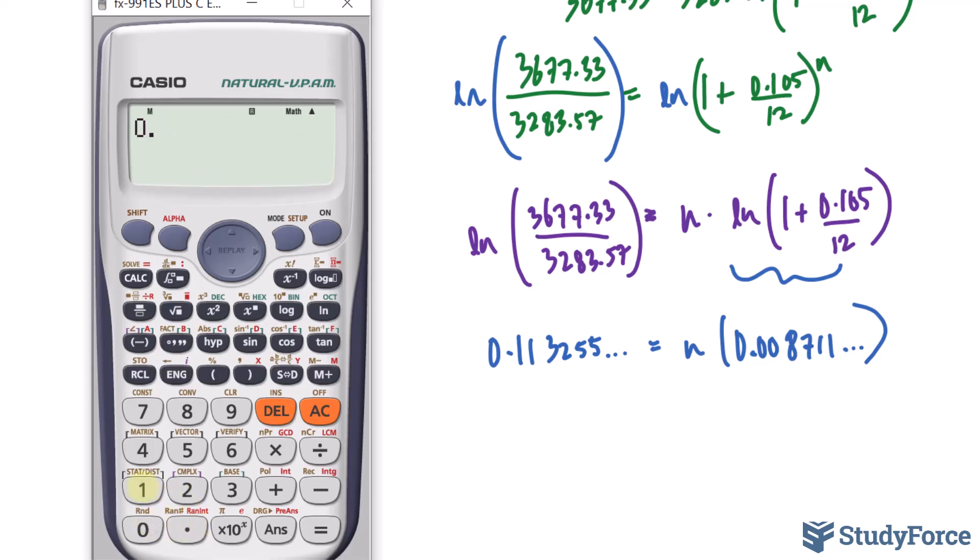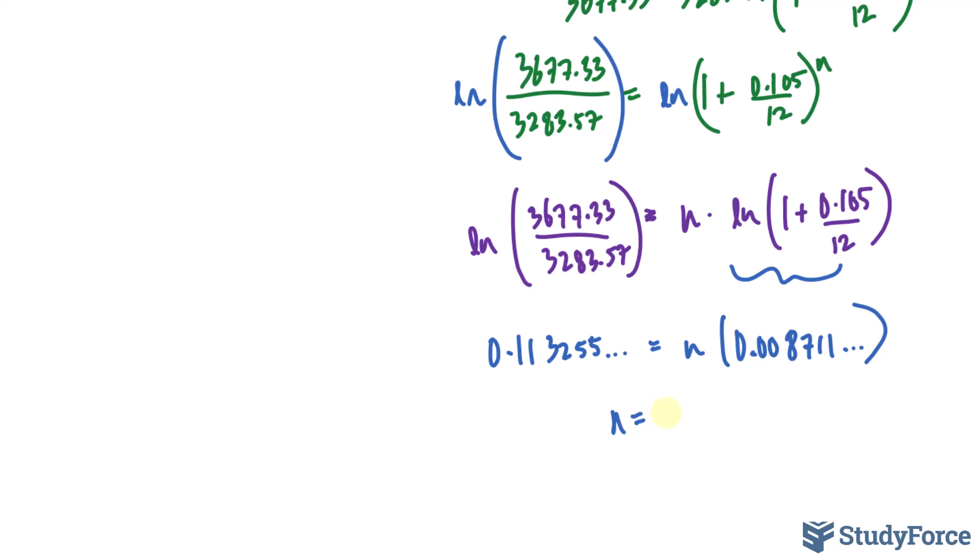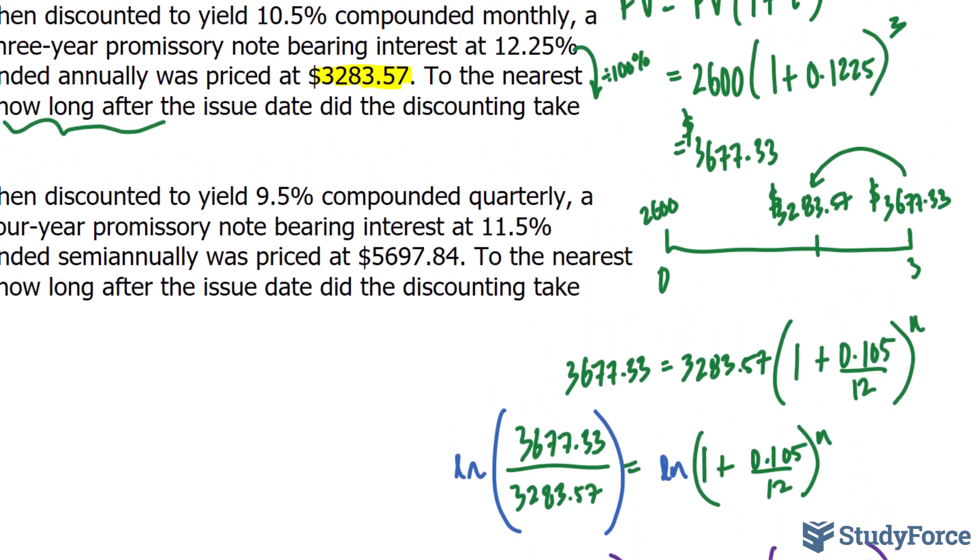So, 0.113255 divided by what we just found on our calculator. And that gives us an n value of roughly 13. Now, because it's compounded monthly, we know that n represents 13 months.